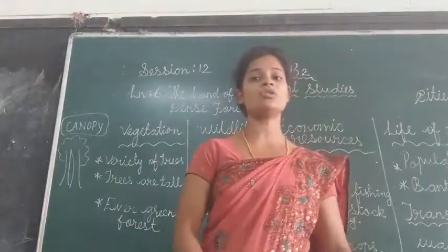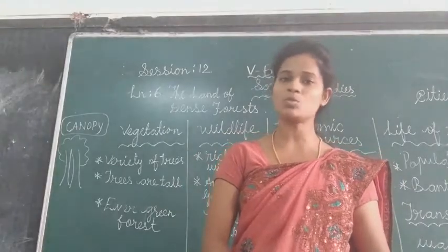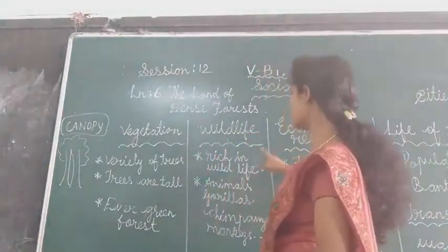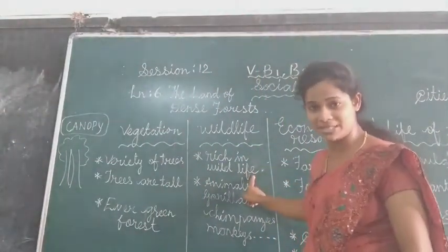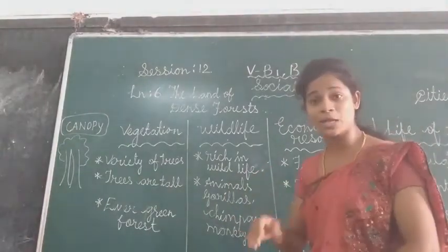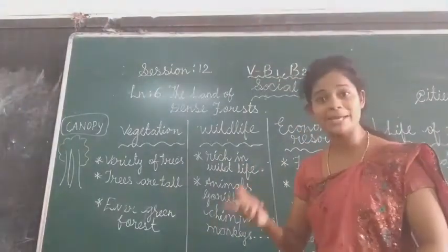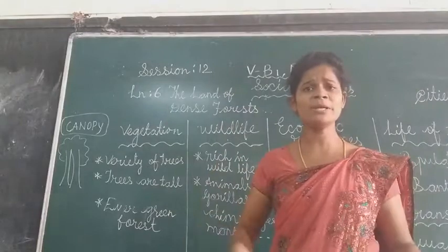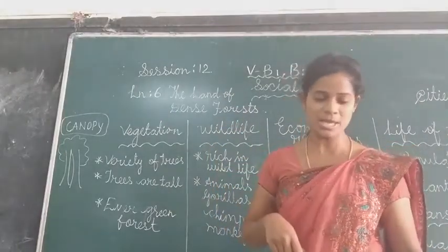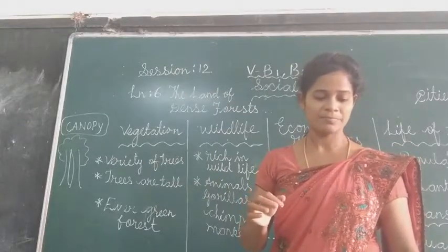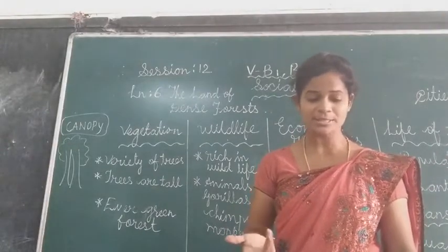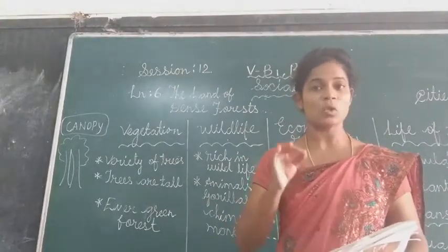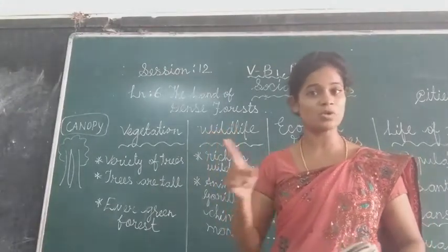Now, when we say about wildlife — wildlife means what animals are living in the forest areas. They are rich in wildlife. Animals like gorillas, chimpanzees, monkeys, baboons, and bonobos — these are very big animals found in this forest. And also hippopotamus, rhinoceros, and sometimes elephants are found. All these are very big animals listed in this region — that is about wildlife.